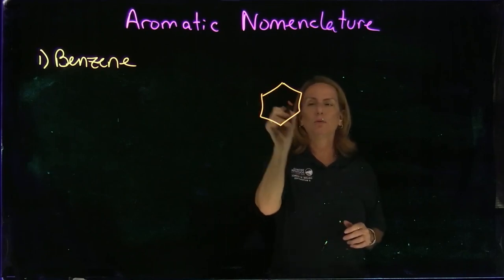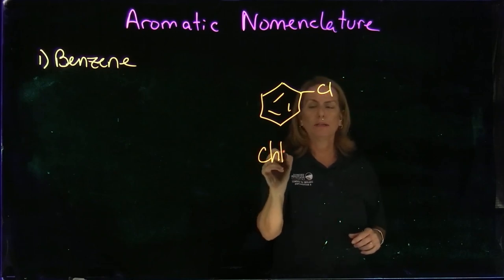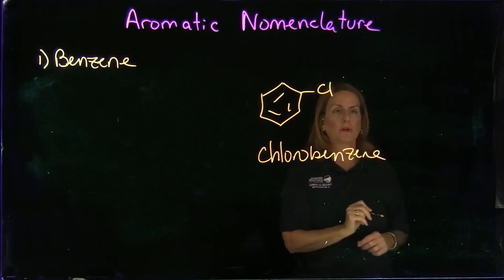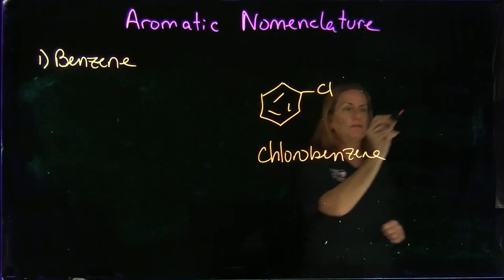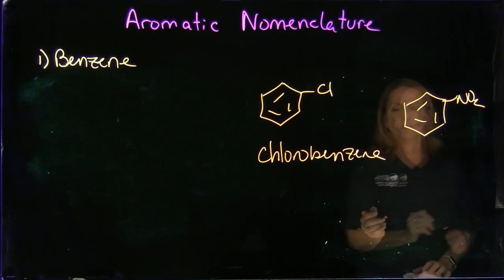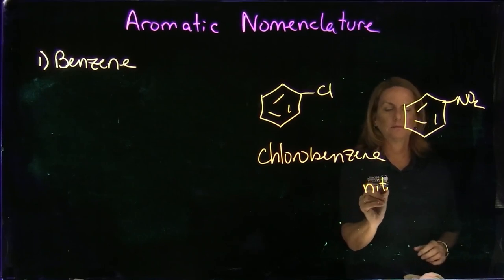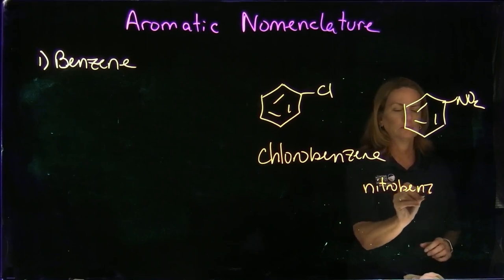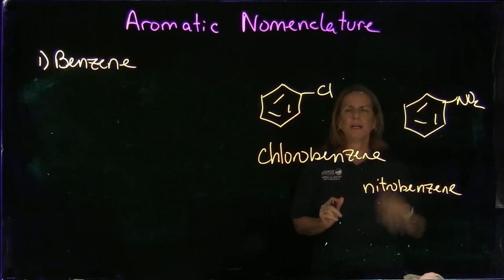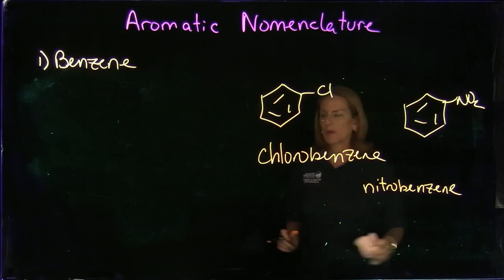If we have a chloro compound on a benzene, this is just chlorobenzene — simple enough. If we have a nitro group, NO2, that is called nitrobenzene. Regardless of where these groups are on the ring, they are simply called benzene derivatives.